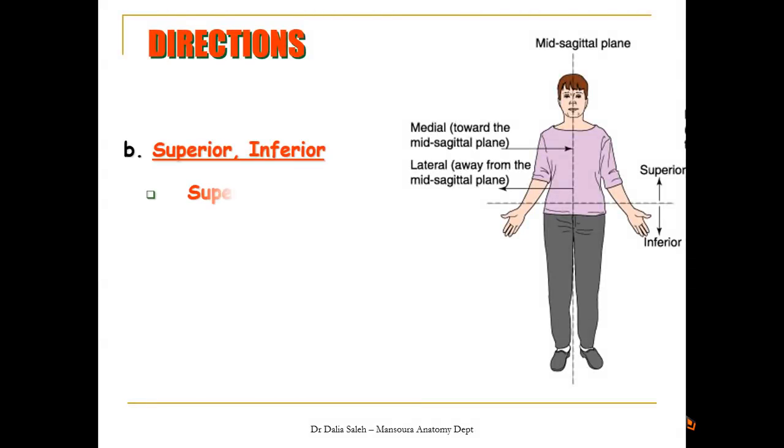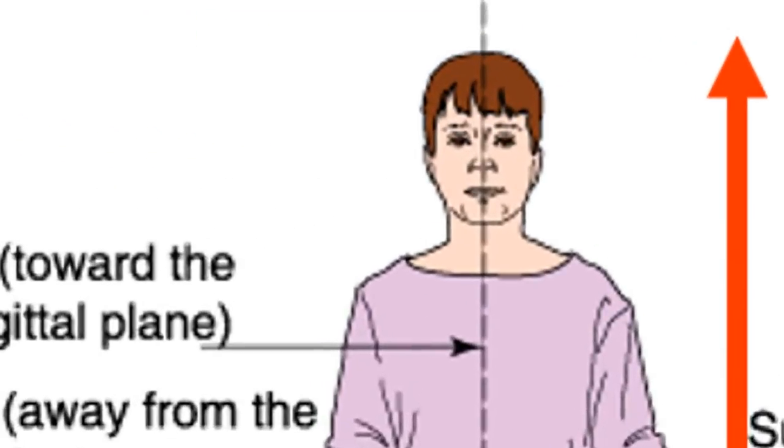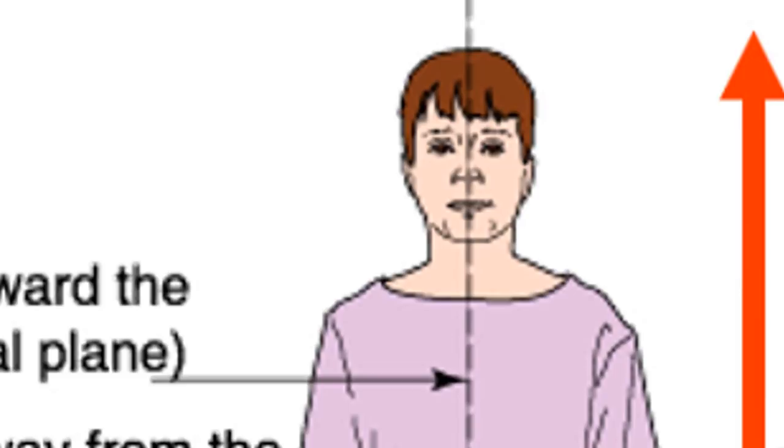Next, we have superior, and opposite to it is inferior. So, superior means above, and inferior means below. So, any point near the head of the body, we call it superior, and any point near the feet or the lower part of the body, we call it inferior. For example, you can describe the position of the nose lies superior to the mouth, and in the same time, the nose lies inferior to the eyes.